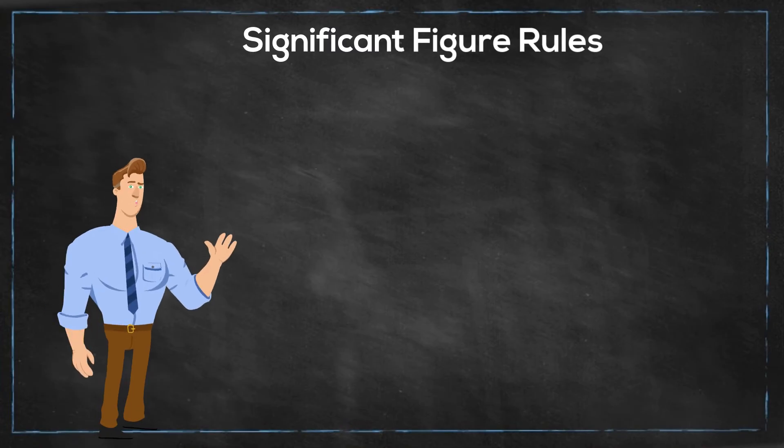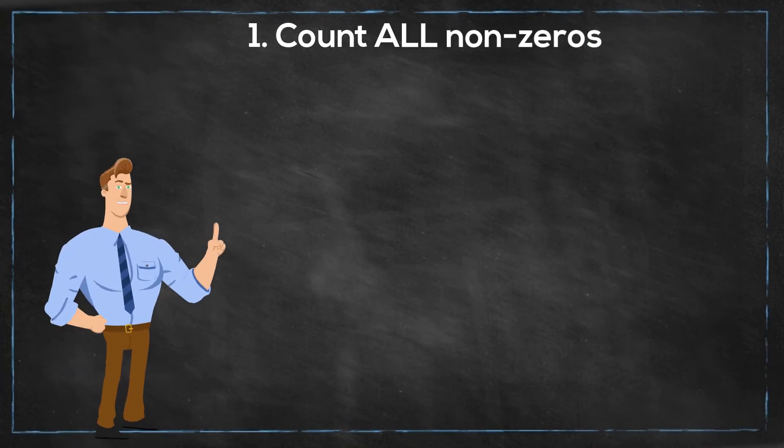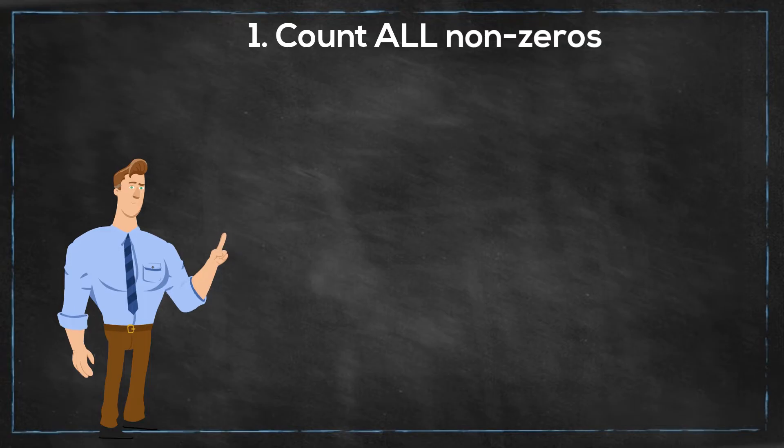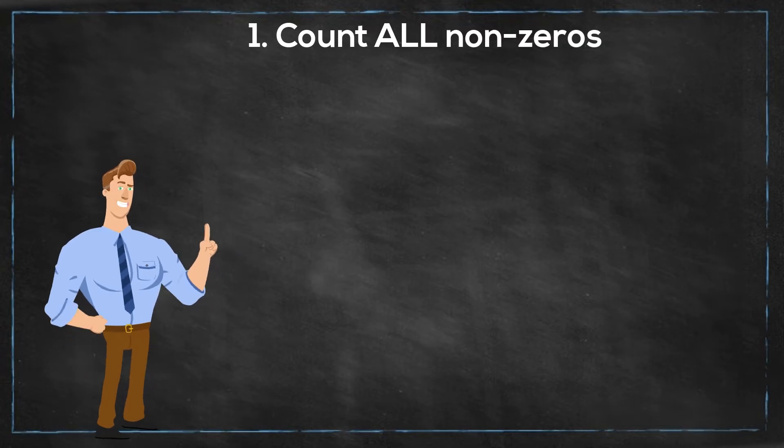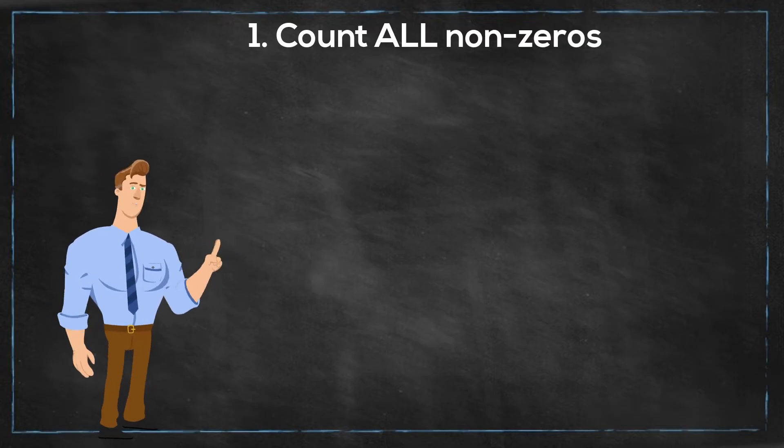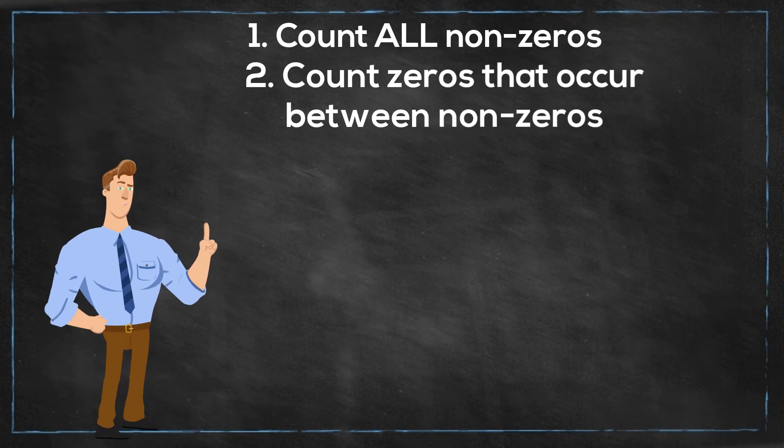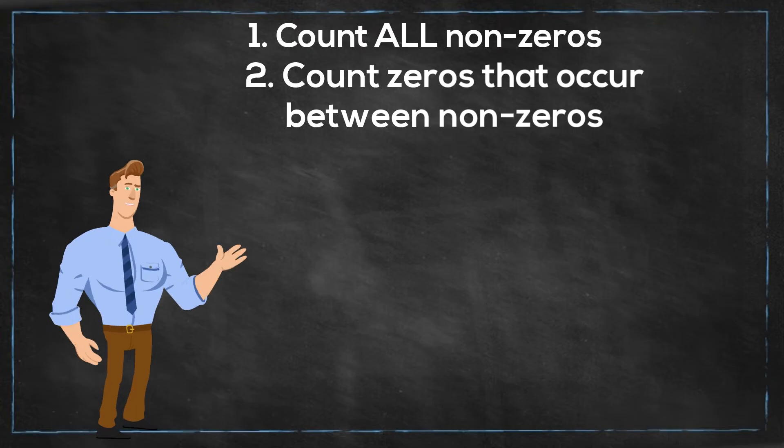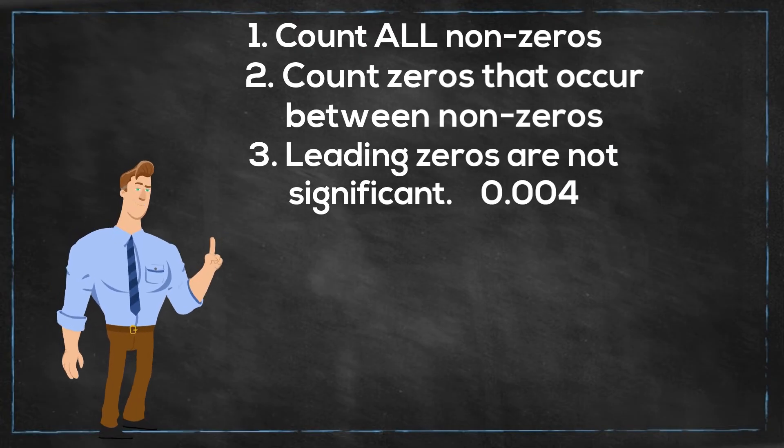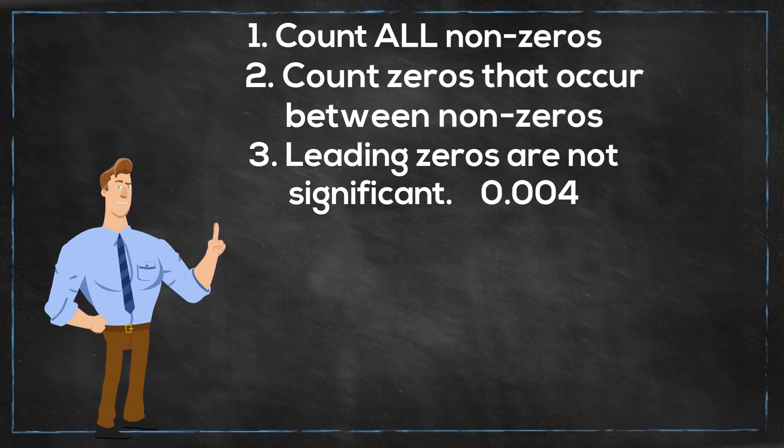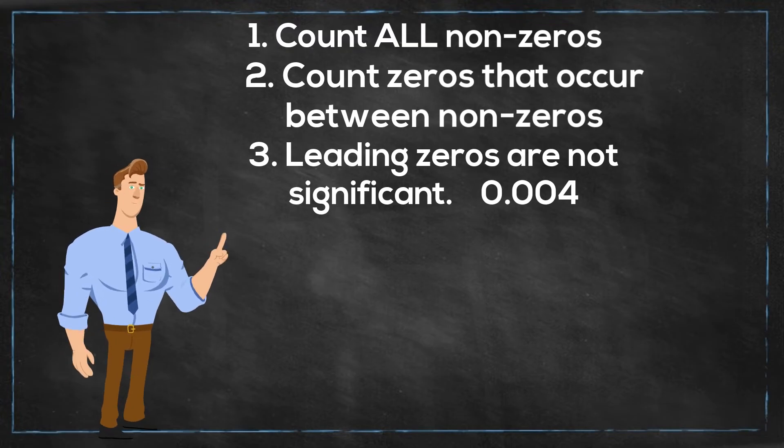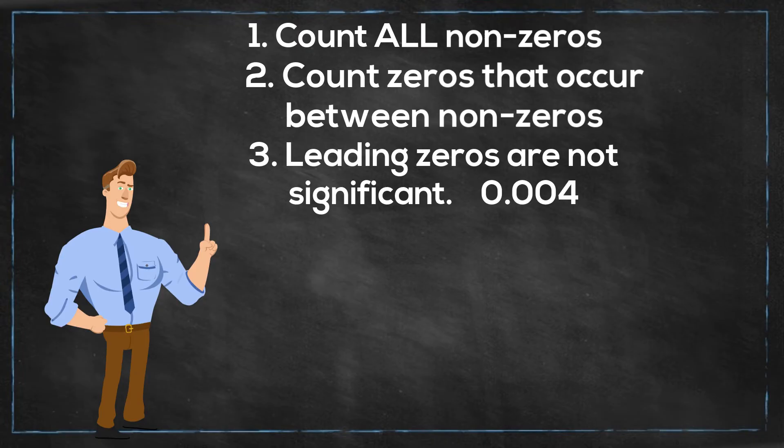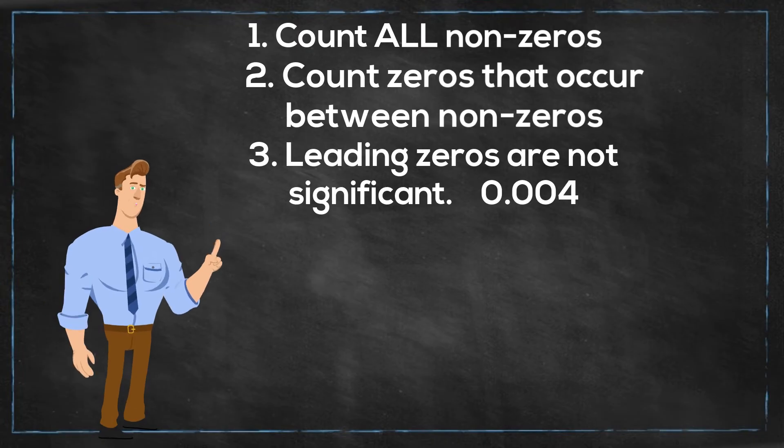First the rules. 1. Count all non-zeros, like the numbers 2, 3, 4, 5 are all non-zeros. 2. Count zeros that occur between non-zeros. 3. Leading zeros are not significant. For example, 0.004, the zeros are not significant.